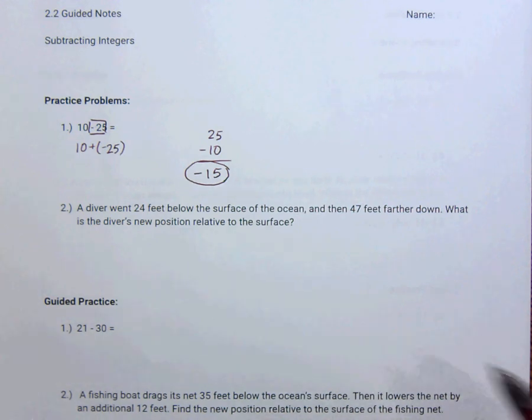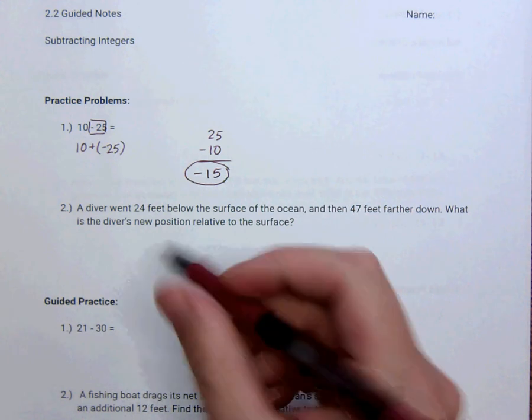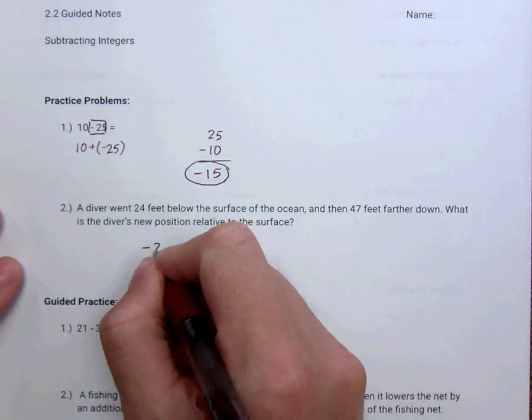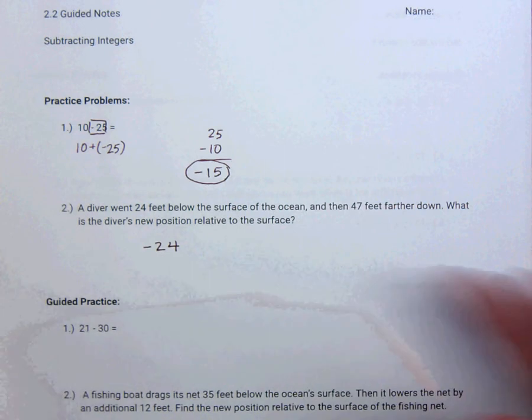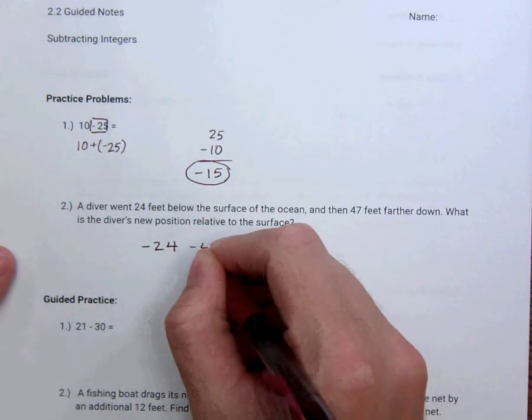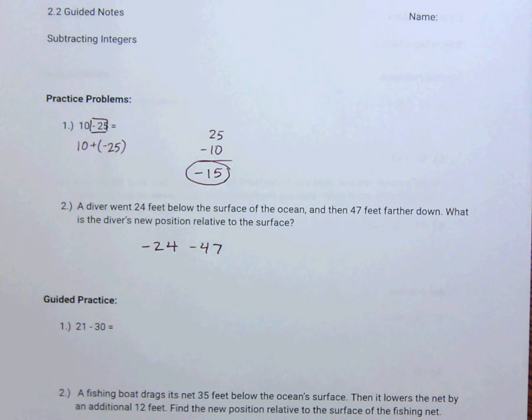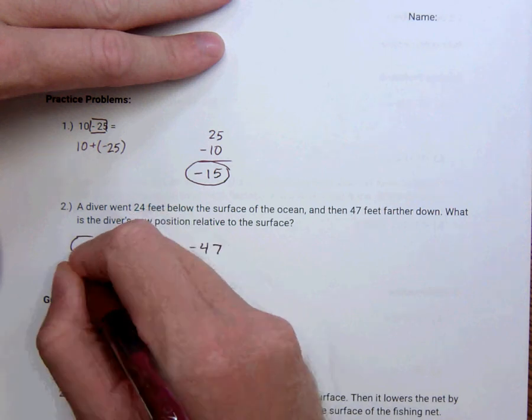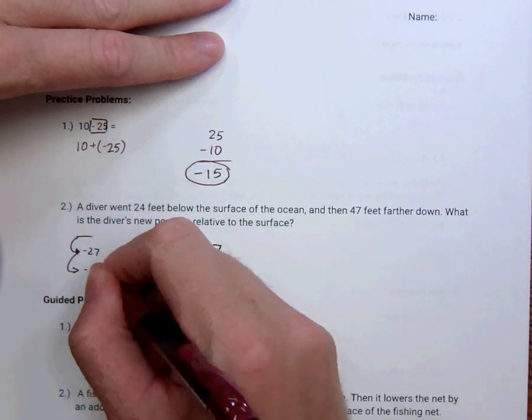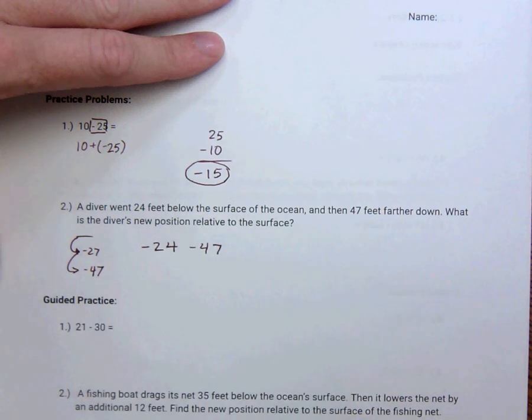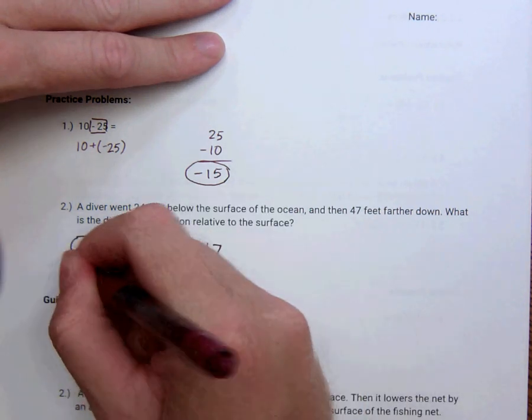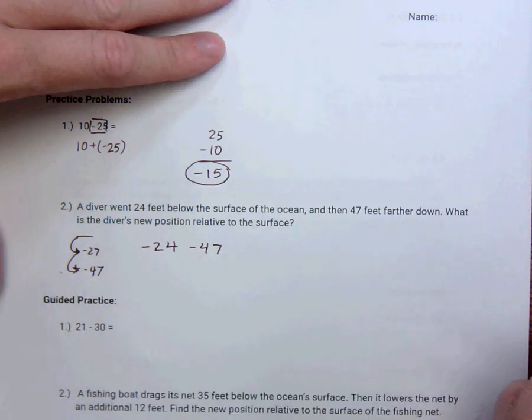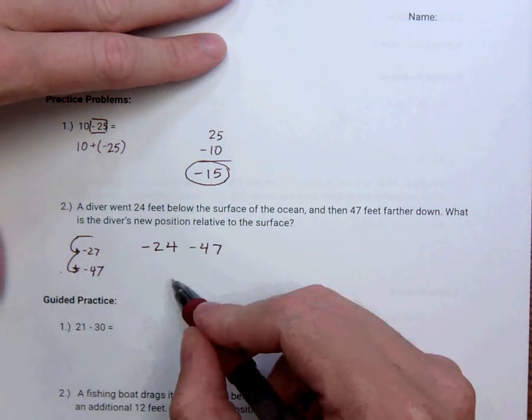Let's do a word problem. A diver went 24 feet below the surface of the ocean. So right now she's below the surface, so I'm going to say negative 24, and then 47 feet lower. So she went down another 47 feet. Down we're going to associate with negative pretty much all chapter. What is the diver's new position relative to the surface? So if the surface was here, she started negative 24 and then she went down negative 47 more. That's plus a negative 47. So we're not actually at negative 47 right now. We are negative 24 down 47 more.